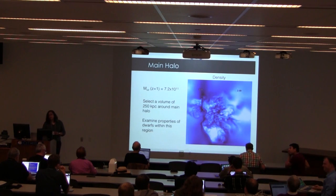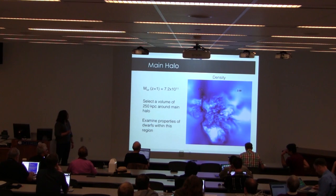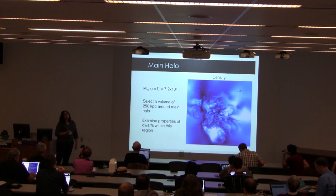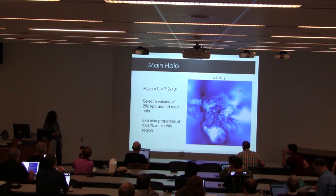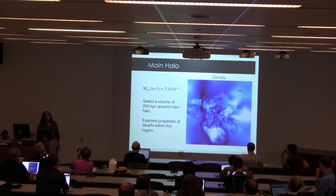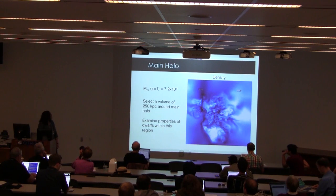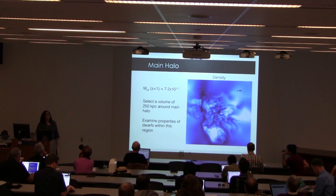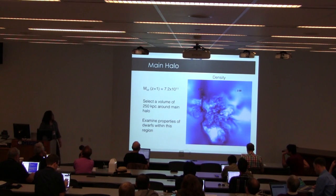For the main halo, I'm showing a density plot here where the darker colors indicate higher density. The scale shows 0 to 2 megaparsecs across, giving a feel for the environment of this main halo. All the results I'm showing are at redshift 1. This halo has a virial mass of 7 times 10^11 solar masses at redshift 1, and we're going to look at a volume of 250 kiloparsecs around the main halo and examine the properties of all the dwarfs within this region.